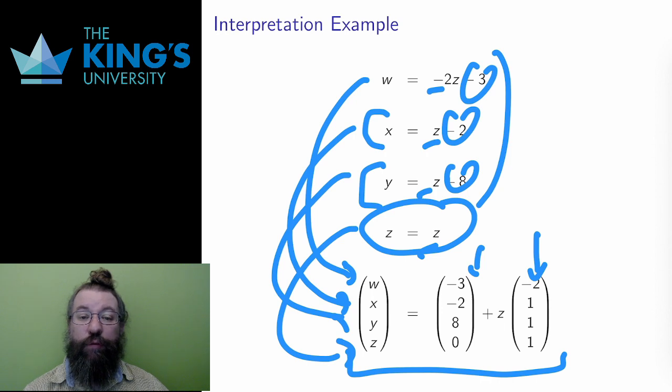It is the line I get starting from the point negative three, negative two, eight, zero in R4, and then adding any and all multiples of the direction negative two, one, one, one. All those points that I get this way are solutions to the system.